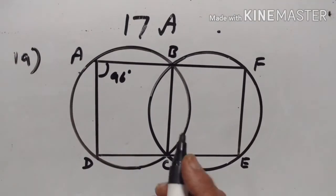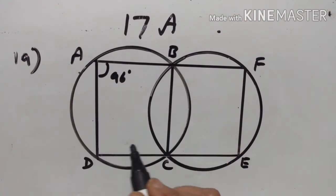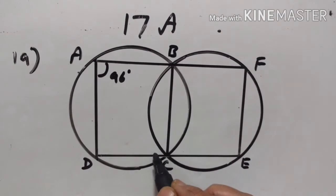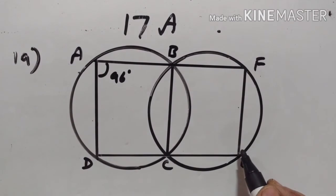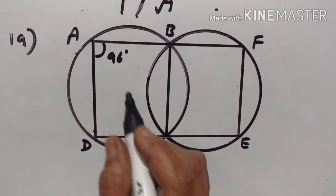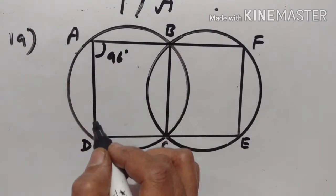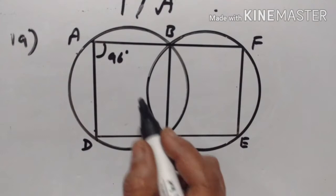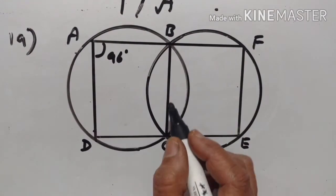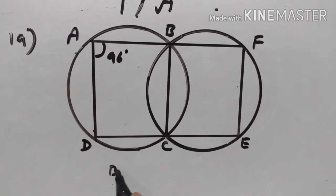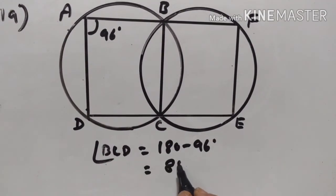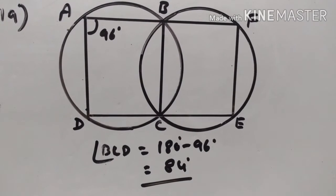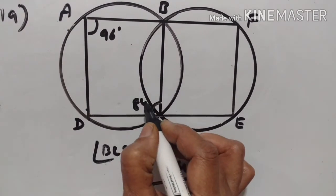19th problem. In this figure, angle BAD is equal to 96 degrees. We have to find angle BCD and angle BFE, and prove that AD is parallel to FE. ABCD is a cyclic quadrilateral, so opposite angles are supplementary. Therefore angle BCD is equal to 180 minus 96, which is 84 degrees.